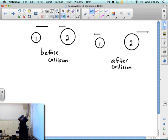These arrows simply represent velocity. This is velocity of object 1, this is velocity of object 2. After the collision, this is velocity of object 1, this is velocity of object 2.